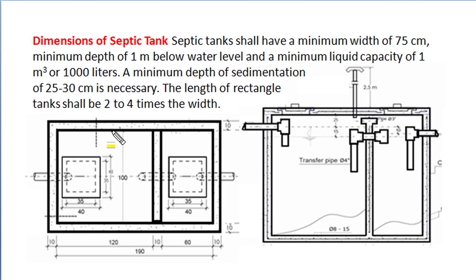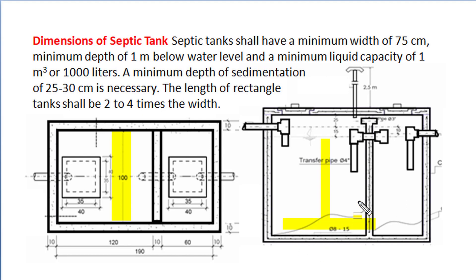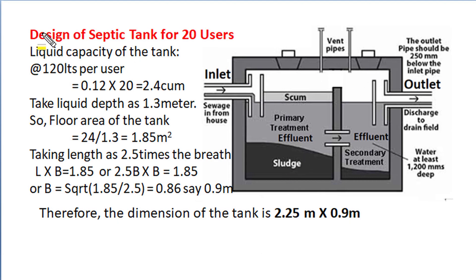The plan and elevation of a typical septic tank is shown here, and we can understand the dimensions of the septic tank from these drawings. The septic tank should have a minimum width of 75 cm — in this example the width is 100 cm. The minimum depth below top water level should be 1 metre — here it is 1.8 metres. The minimum liquid capacity of any septic tank should be 1 cubic metre or 1000 litres, and a minimum depth of sedimentation of 20 to 30 cm is necessary. The length of the septic tank should be 2 to 4 times the width, and depth should be from 1 metre to 2 metres below top water level.